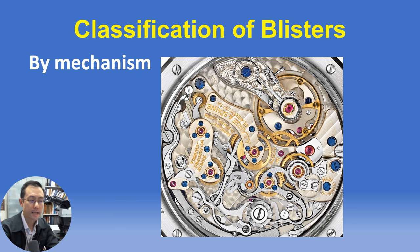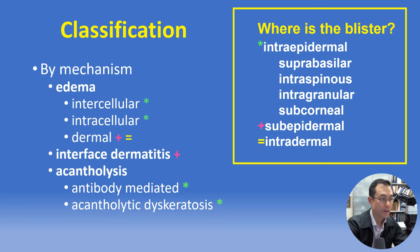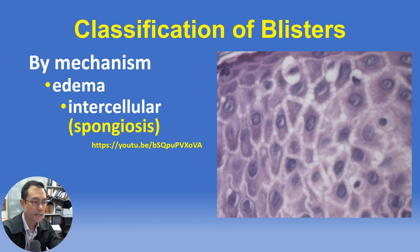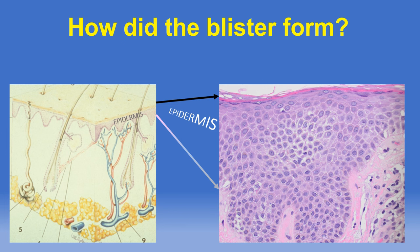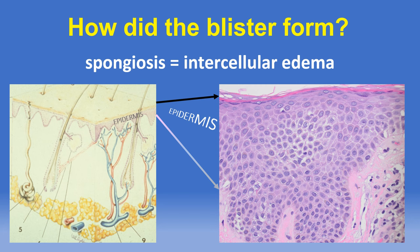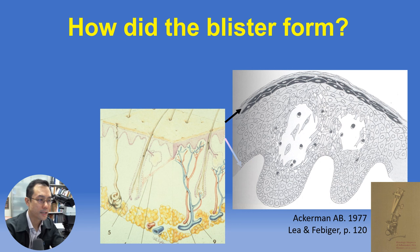Next, let's see how understanding the histopathologic features that reflect the mechanisms of blister formation can complement our knowledge of differential diagnoses. We should focus on how to recognize histopathologically both intercellular and intracellular edema as well as acantholysis and acantholytic dyskeratosis, as both can result in intraepidermal blisters. Spongiosis is intercellular edema of keratinocytes in the epidermis and contiguous adnexal epithelium, and with sufficiently prominent intercellular edema, intraepidermal spongiotic vesicles form, most commonly in the spinous layer.